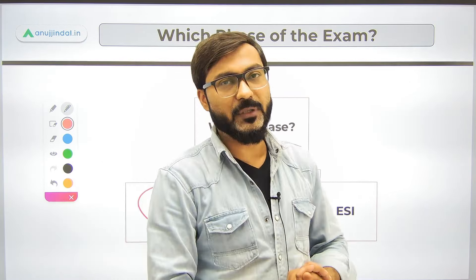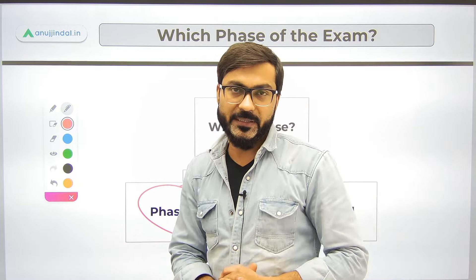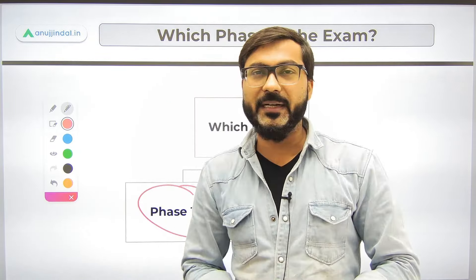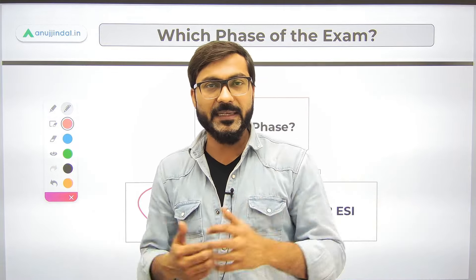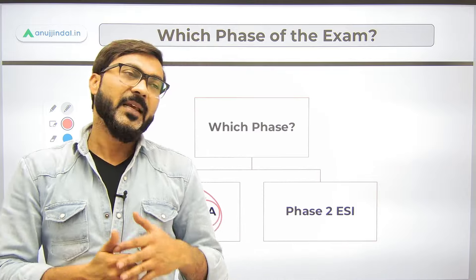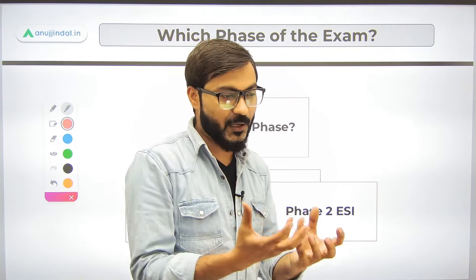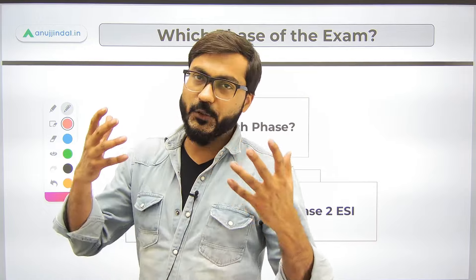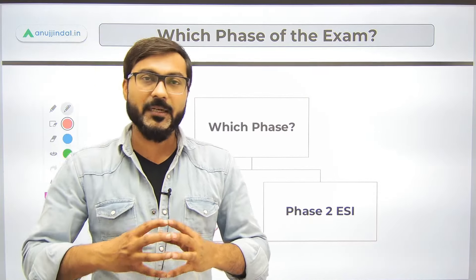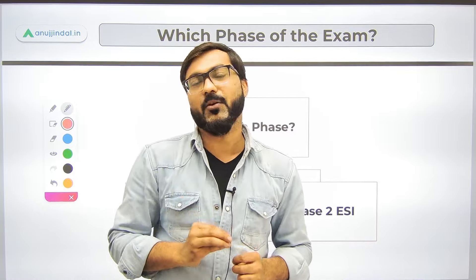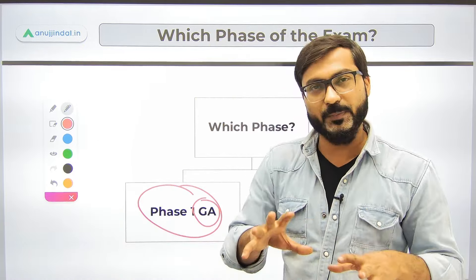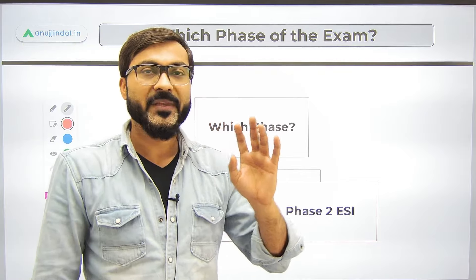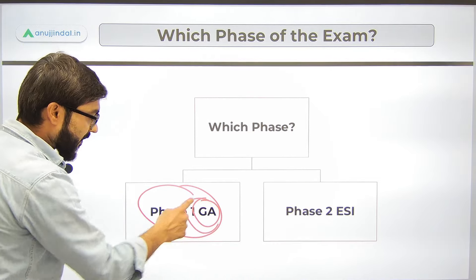Last year in 2023, five questions came from indices, reports, and surveys in Phase 1. You might feel that out of 85 questions, five is very less and does not justify the effort. But you should not eliminate topics based purely on cost-benefit analysis — here, in the case of indices and reports, you have to focus and do it.